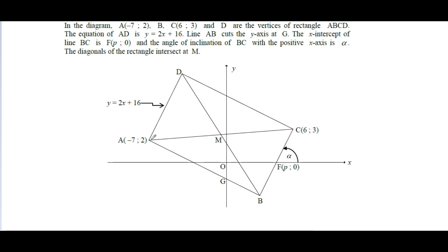Line AB cuts the y-axis at G, which is already marked on the diagram. The x-intercept of line BC is at point F, labeled with x value p and y value zero. The angle of inclination of BC is alpha — just a label, no different from using other letters like a, b, x, or y.